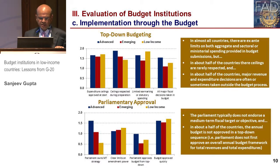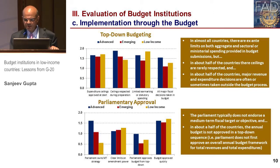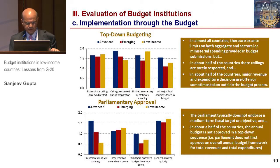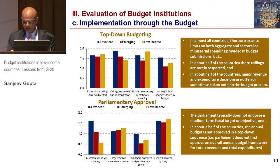On the final implementation stage, as regards top-down budgeting, in almost all countries there is a limit on both aggregate and sectoral or ministerial spending provided in the budget, but these ceilings are rarely respected. In about half of the countries, major revenue and expenditure decisions are often or sometimes taken outside the budget process — which is quite serious. As regards parliamentary approval, Parliament typically does not endorse a medium-term fiscal target or objective, and in about half of the countries, the annual budget is not approved in a top-down sequence.